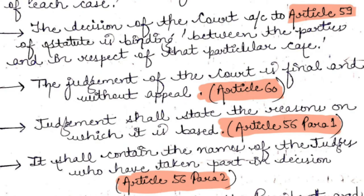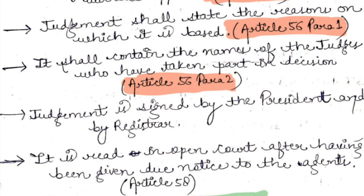The judgment shall state the reasons on which it is based, per Article 56.1. It shall contain the names of the judges who took part in the decision. The judgment is signed by the president and the registrar, and is read in open court after due notice has been given to the agents, per Article 58.